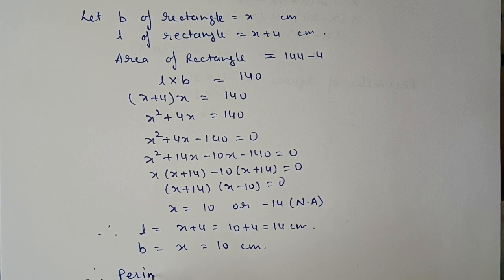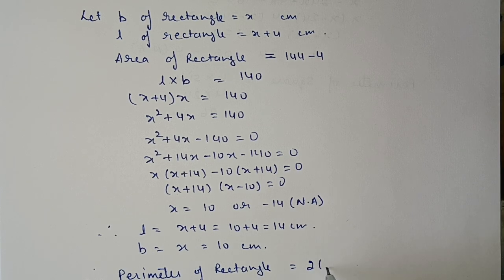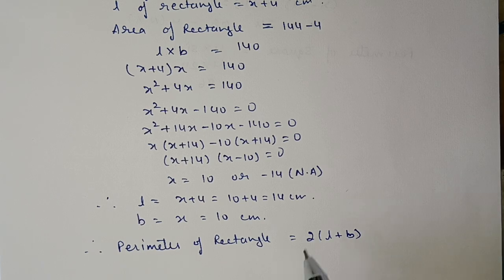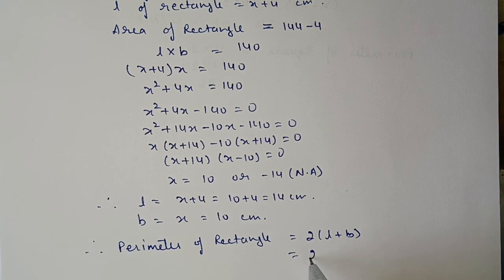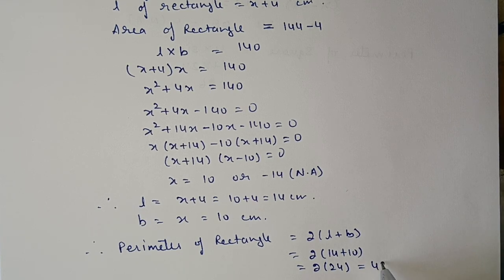Perimeter of the rectangle = 2 × (length + breadth) = 2 × (14 + 10) = 2 × 24 = 48 centimeters.